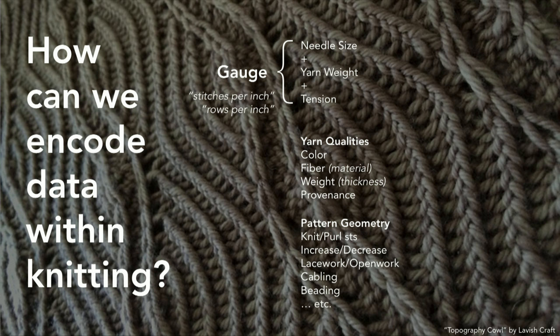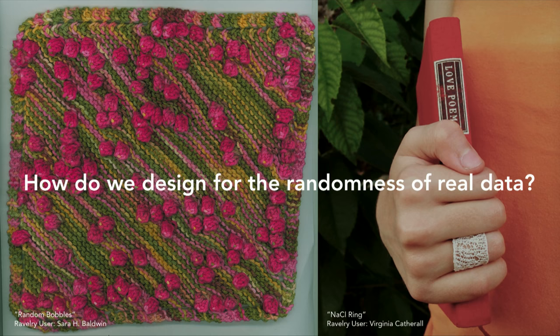If you go back to Ravelry and look at these patterns, they're patterns — they like to be regular, consistent, and symmetrical wherever possible. Looking through Ravelry, there's not as much in the realm of random or asymmetrical designs. So trying to figure out: if I want to design for data, how do I design something that can withstand some of the noise that data brings? These are two examples from Ravelry — one is random bobbles, which actually looks like a scatter plot, based on a random set of numbers generated, or sometimes made when they ran out of yarn and switched.